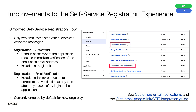Okta uses the registration activation template in cases where the application requires immediate verification of the end user's email address. This template also includes a magic link for a smoother sign-in experience. Okta uses the registration email verification template if email verification isn't immediately required to sign in to the application. This template includes a link for end users to complete email verification at any time after they successfully sign in to the application. This feature is currently enabled by default for new orgs only.